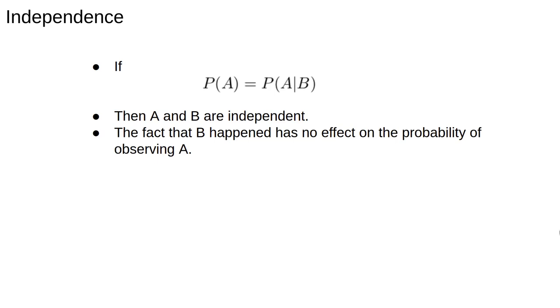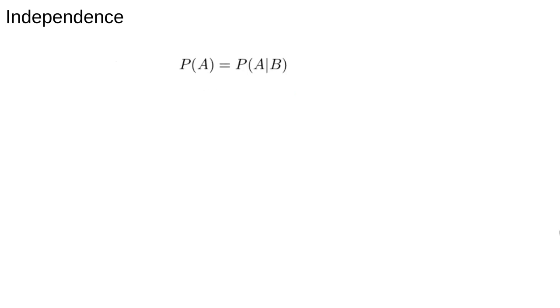This is just saying the fact that B happened has no effect on the probability of observing A. We could do some algebra to come up with a useful formula for calculating probabilities of independent events. Using the previous equation for conditional probability, when events A and B are independent, P(A) = P(A|B). We sub in the definition of conditional probability, and rearranging the terms, we find that P(A ∩ B) = P(A) × P(B).